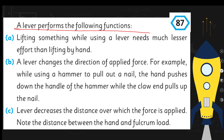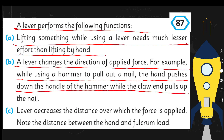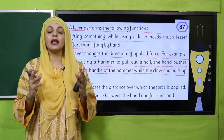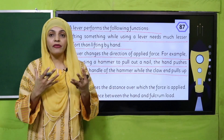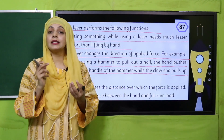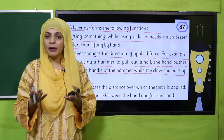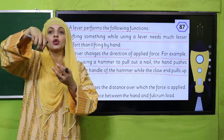A lever performs the following functions: lifting something using a lever needs much less effort than lifting by hand. A lever also changes the direction of the applied force — for example, when using a claw hammer to pull out a nail, the hand pushes down the handle while the claw pulls the nail upward. A lever makes it easy to lift things and changes force direction to pull objects out.